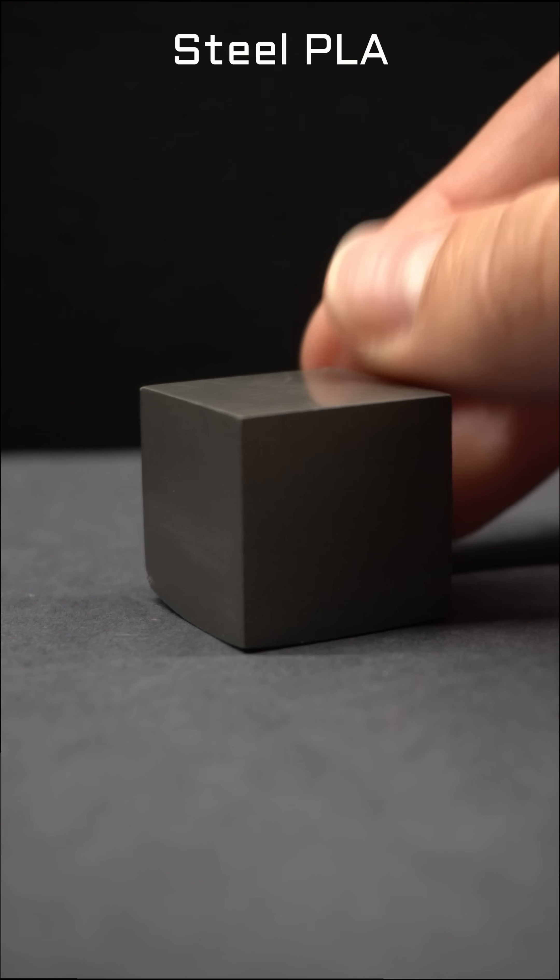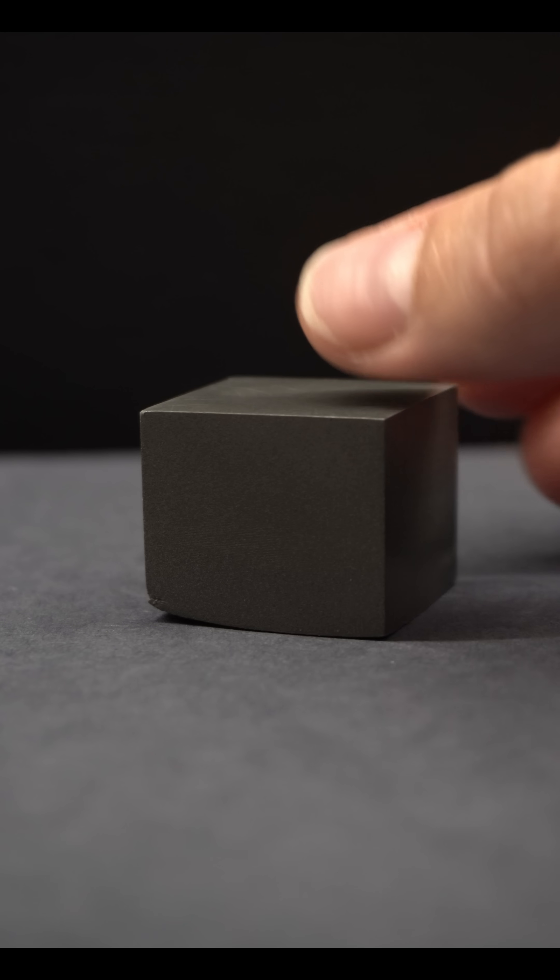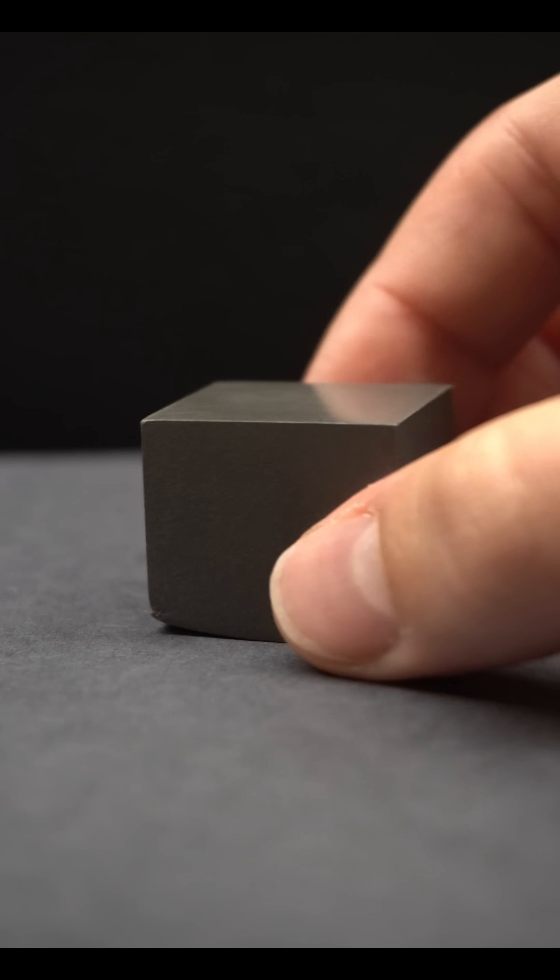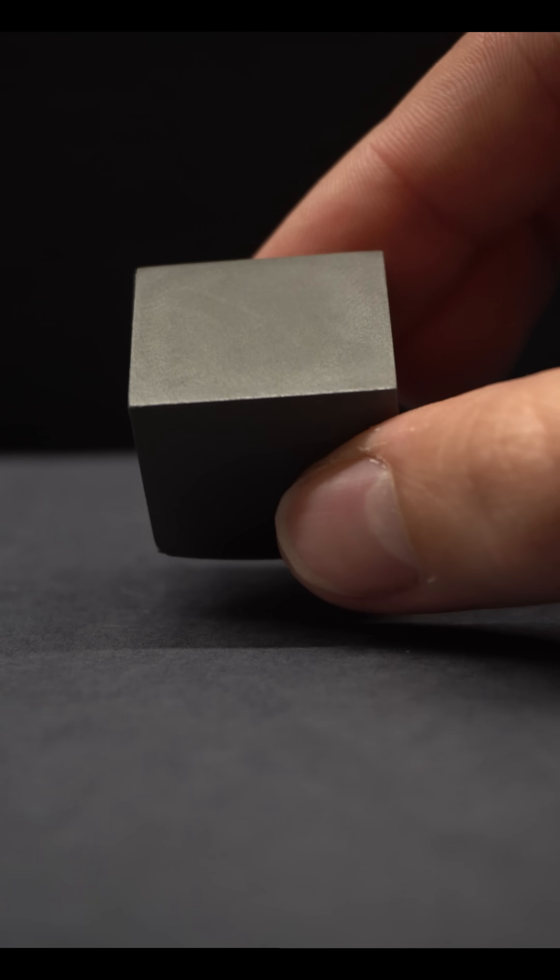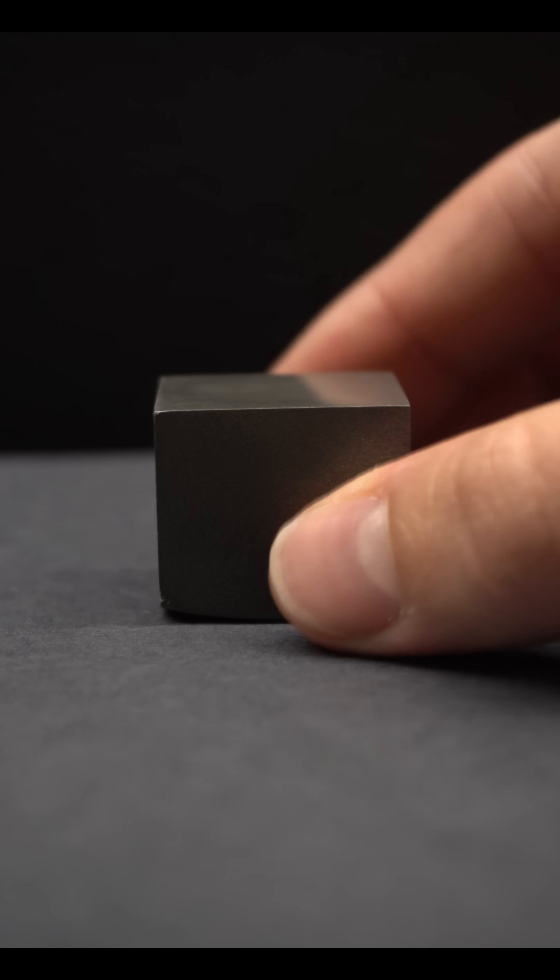Steel PLA. This is just normal PLA but infused with steel. So it supposedly is two times the density of regular PLA. It's fun because you can sand it and make it shiny-ish and it's heavier than the norm. I, myself, just want tungsten PLA.